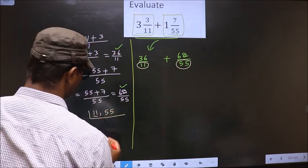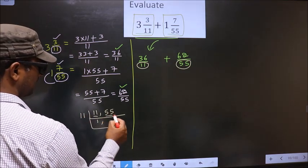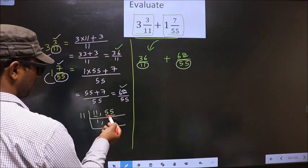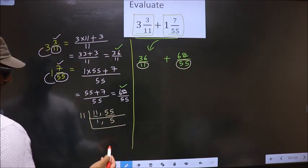First number is 11. 11 is a prime number, so 11 once is 11. The other number is 55. When do we get 55 in the 11 table? 11 times 5 is 55.